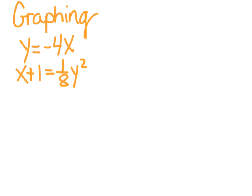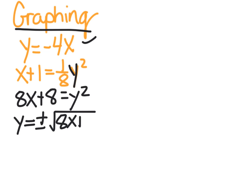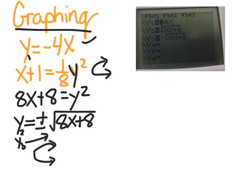Now let's use the graphing method for this system of equations. We have a line and we have a parabola. We need to rearrange them both so that y is by itself. The first one is already like that. But the second one, we need to get y by itself — we need to multiply both sides by 8. So 8x plus 8 equals y squared, and then we take the square root: y equals plus or minus the square root of 8x plus 8. You have to use the plus and the minus when you graph this in your calculator, because y squared is a sideways parabola. The plus square root gives you the top part, and the minus square root gives you the bottom part. So we'll put the line in y1, y2 as the positive version, and y3 as the negative version.